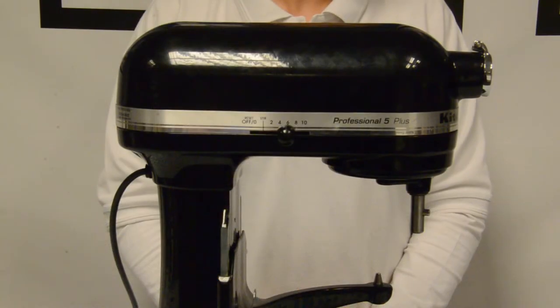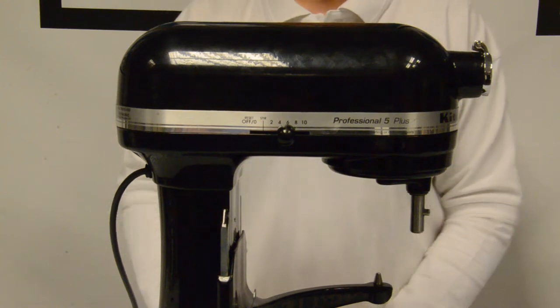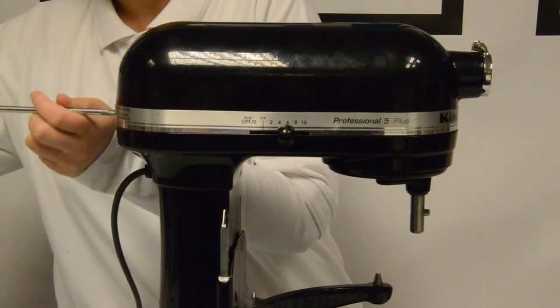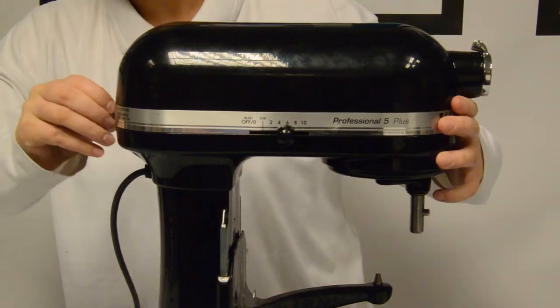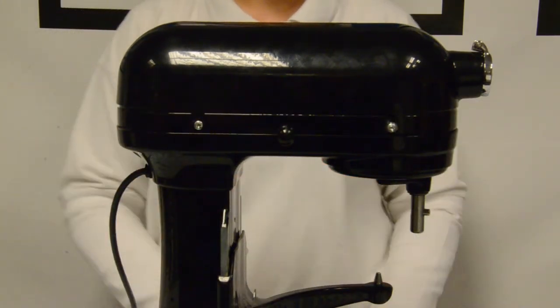Remove the trim band from the head of the mixer. Use a PH2 screwdriver and undo the screw at the back of the mixer. Be careful not to bend the trim band as you take it off. Be aware that the trim band can spring off. Keep the screws safe and ready for when the mixer is put back together.